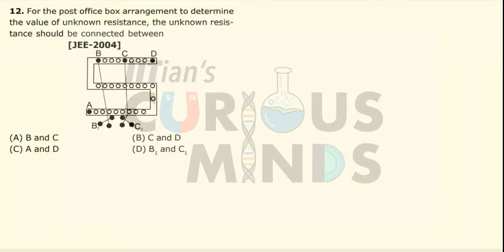For post box arrangement, to determine the value of unknown resistance, the unknown resistance should be connected at what point? First of all, understand how a post box arrangement works. By connecting wires at different points, we can calculate the unknown resistance.